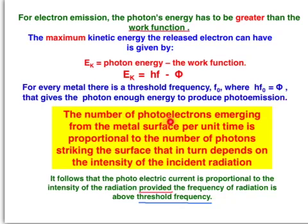The number of photoelectrons emerging from the metal surface per unit time, let's say per second, is proportional to the number of photons striking the surface. That in turn depends on the intensity of the incident or incoming radiation or light. It follows that the photoelectric current is proportional to the intensity of the radiation, provided there is a condition: the frequency of the radiation is above the threshold or above the minimum frequency.